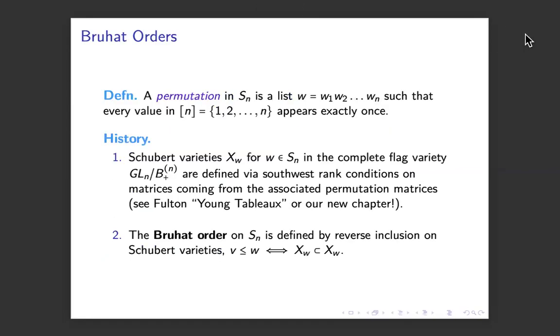Let me start right away with Bruhat order. If you have a permutation in S_n, I'm going to always denote it by the one-line notation. So W will be a list of numbers, W_1 through W_n in a particular order, and each number has to appear exactly once. The Schubert varieties in the complete flag manifold are indexed by permutations, and they're defined by certain southwest rank conditions on matrices.